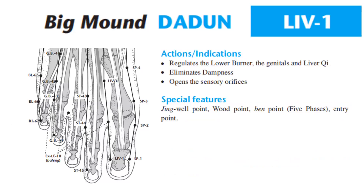For the actions and indications, Liver 1 regulates the lower burner, the genitals, and Liver Qi, eliminates dampness, and opens the sensory orifices. Special features: Liver 1 is the Jing Well point, Wood point, Bend point, Five Phases, and Three Point.